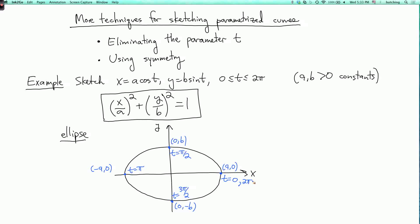So it's just like the circle. We've just stretched the x-axis by a factor of a, and we've stretched the y-axis by a factor of b. In particular, the arrow goes counterclockwise as before. Alright, let's do another example.